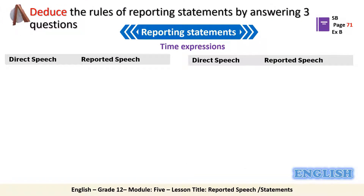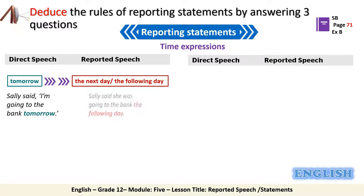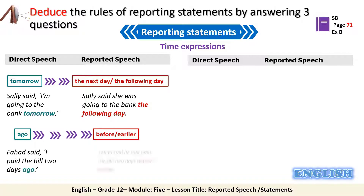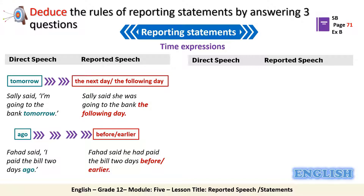We continue with the changes of time expressions. 'Tomorrow' should be changed to 'the next day' or 'the following day' — for example, 'Sally said I'm going to the bank tomorrow' becomes 'Sally said she was going to the bank the following day.' After that, 'ago' changes to 'before' or 'earlier' — for example, 'Fahd said I paid the bill two days ago' becomes 'Fahd said he had paid the bill two days before' or 'two days earlier.'